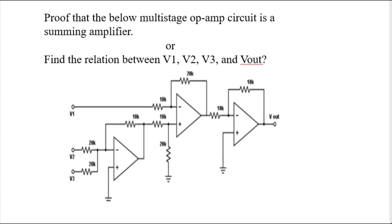Hello guys, in this video we will do this question. You can see the circuit — this is a multi-stage op-amp circuit having three op-amps. This question is normally asked in two ways. The first type is: prove that the below multi-stage op-amp circuit is a summing amplifier, which means you have to show that V-out equals V1 plus V2 plus V3.